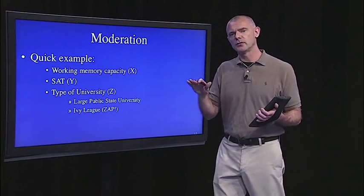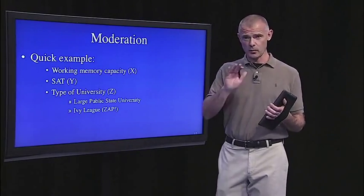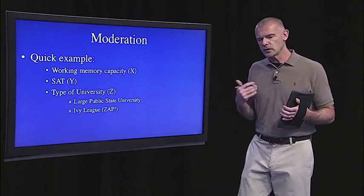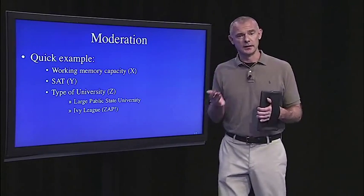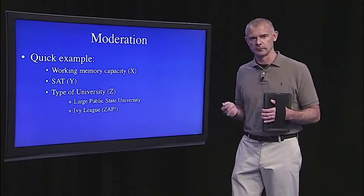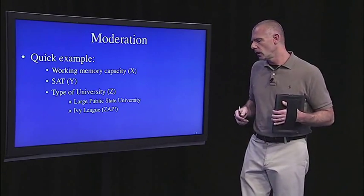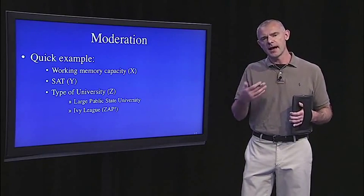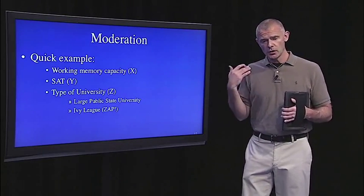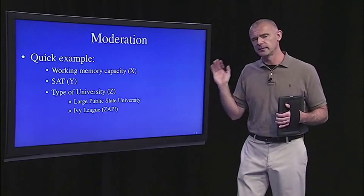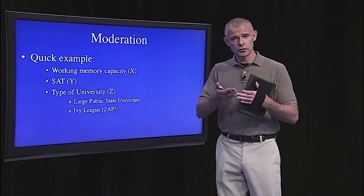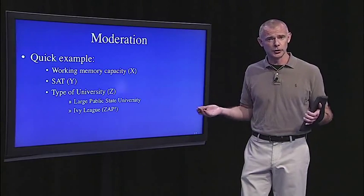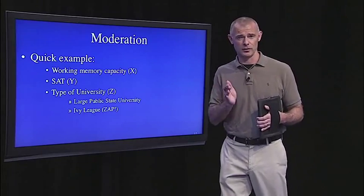Before I get to the example on extraversion and happiness, just a very quick example from my own research. It's very quick, and I think it demonstrates the concept very simply. So in my own research, I'm interested in individual differences in intelligence and working memory capacity. It's like short term memory and attention. And I've been doing this for two decades, and I've seen over and over again that scores on our tasks that we designed to measure working memory capacity, they're strongly correlated with scores on standardized tests like the SAT. So there's a strong positive correlation between working memory capacity and SAT. We see this over and over again. This is not new. This was first demonstrated, I think, in the early 80s.